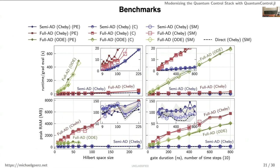On performance: the semi-automatic differentiation is compared to full AD (doing the entire propagation inside the AD framework using an ODE solver or a non-in-place Chebyshev propagator). The results show semi-AD blows full AD out of the water in both runtime and memory usage. In fact, comparing to a direct optimization with a simple analytic square-modulus gate functional shows exactly the same performance — the AD overhead is negligible, completely swamped by the propagation cost. You get arbitrary functionals at essentially no additional cost.